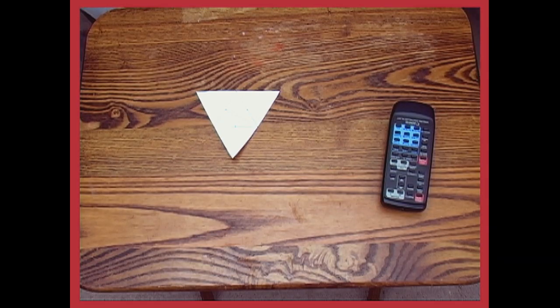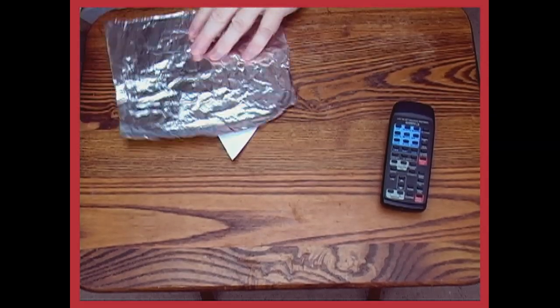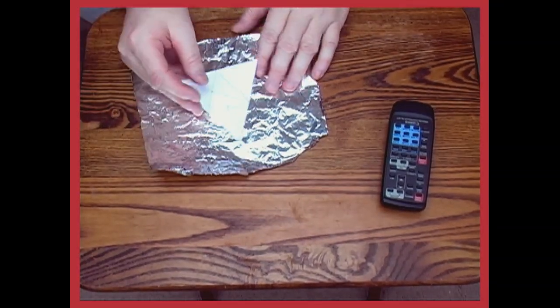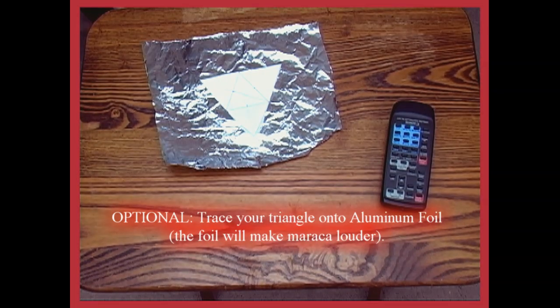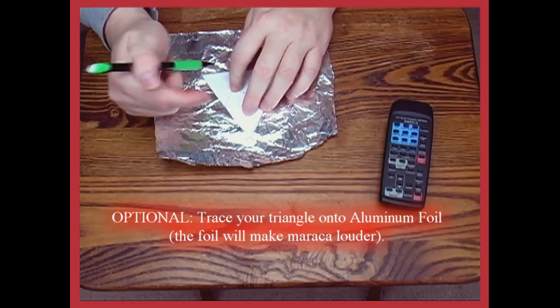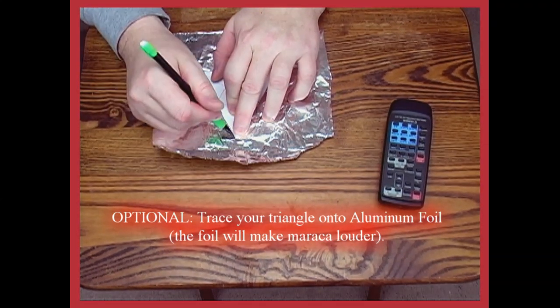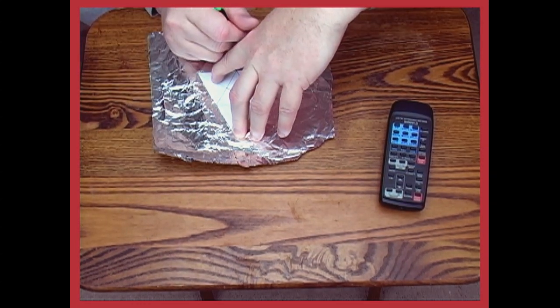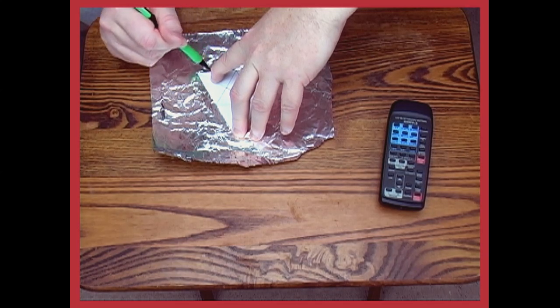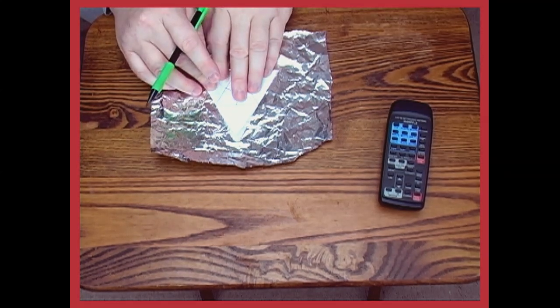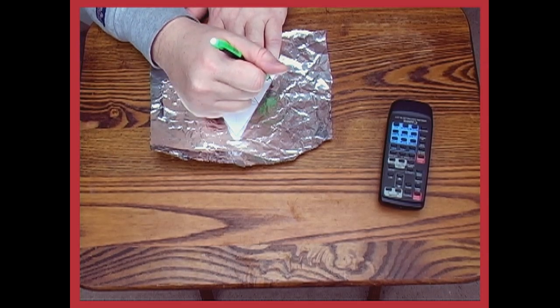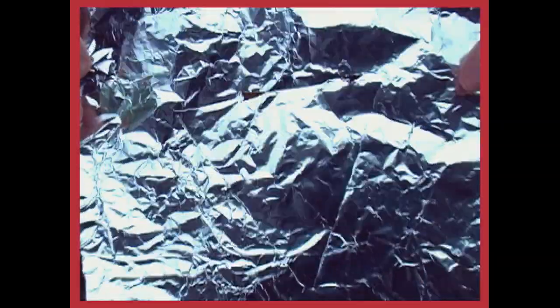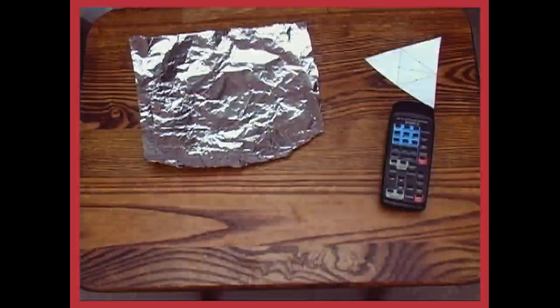Now if you're going to use your aluminum foil, this is the time to bring it out. This is optional, but it does make a lot more sound. We're going to take our pencil and we're going to carefully trace our triangle here. So we need to cut out aluminum foil of about the same size.